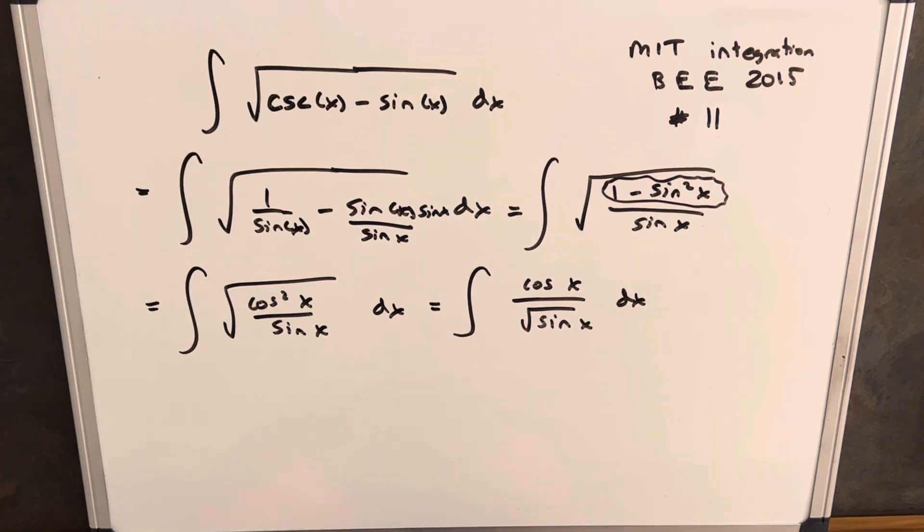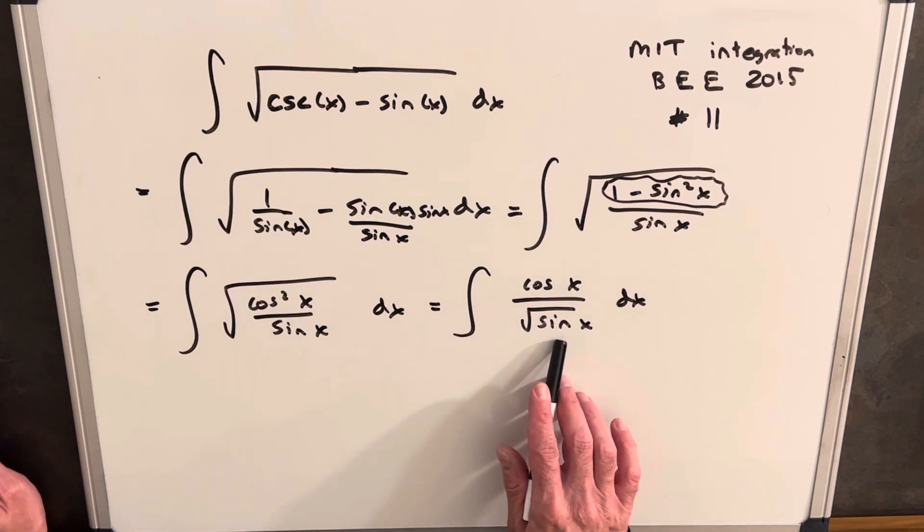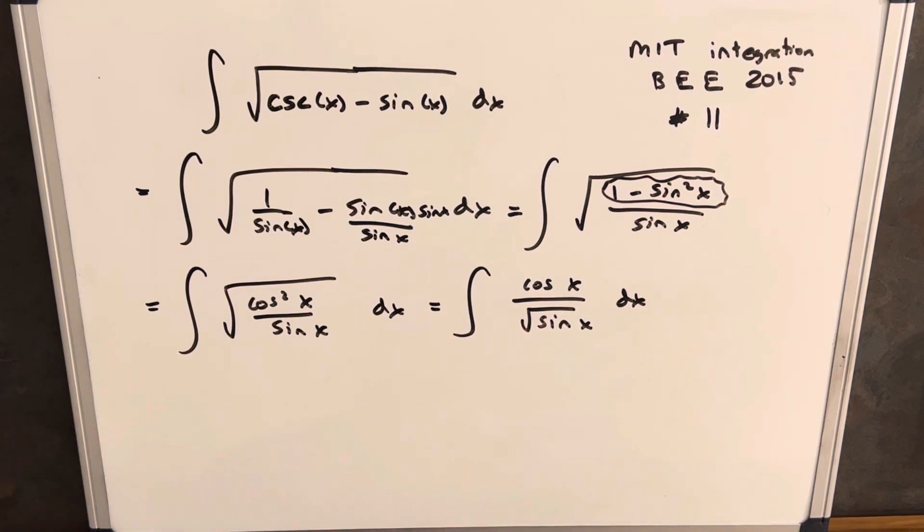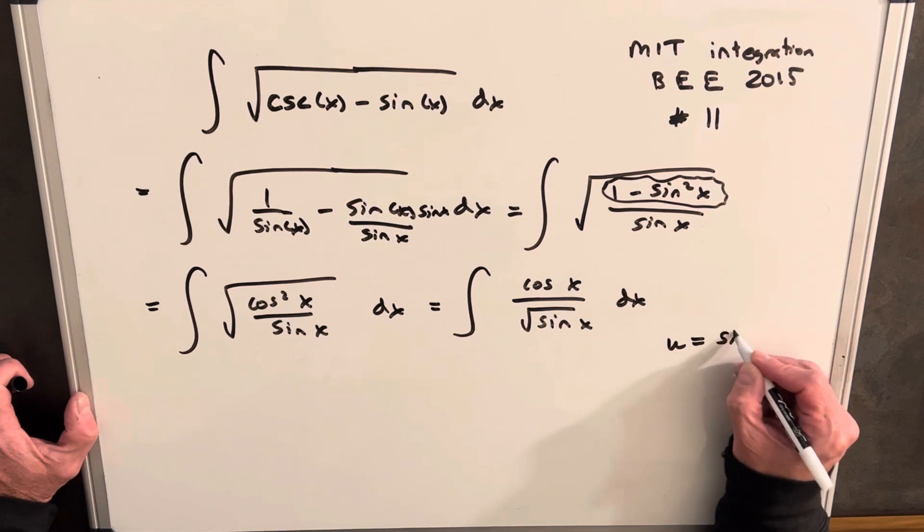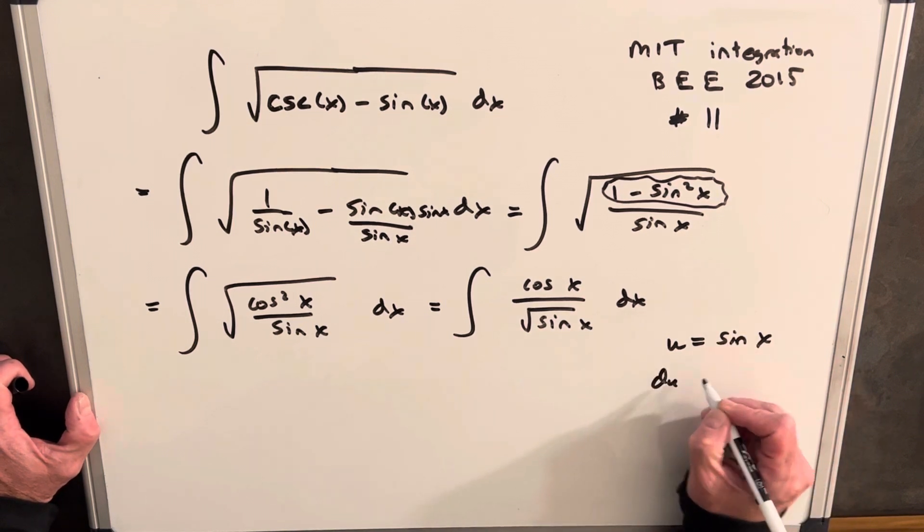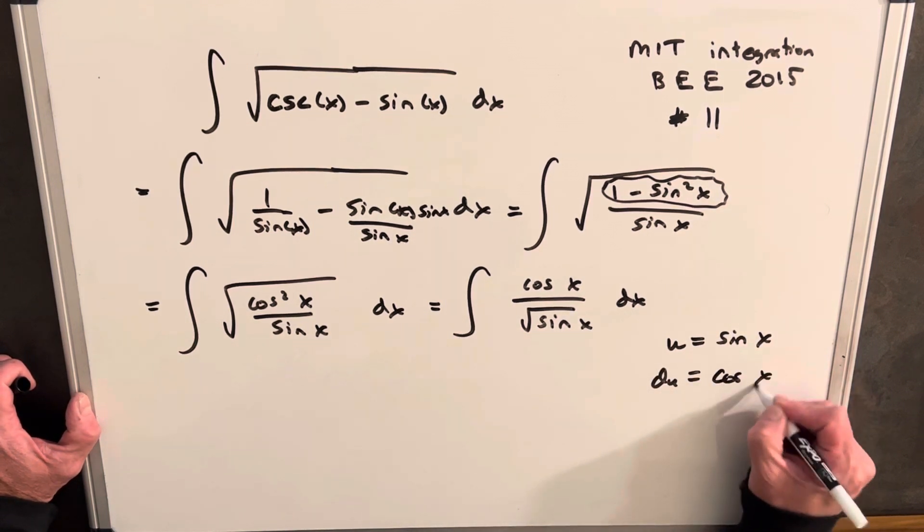And now I think we're in good shape for our u substitution, because the derivative of sine is cosine. So let's call our u sine x, and then our du cosine x.